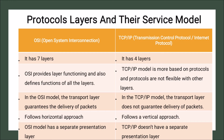The OSI model has a separate presentation layer, but TCP/IP does not have a separate presentation layer. To summarize, OSI has seven layers, TCP/IP has four layers; OSI is based on layer functioning, TCP/IP is based on protocol.